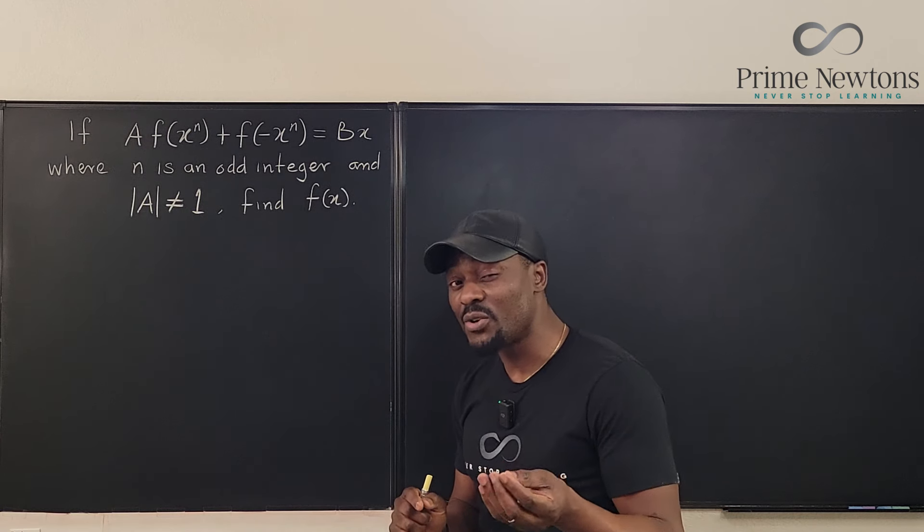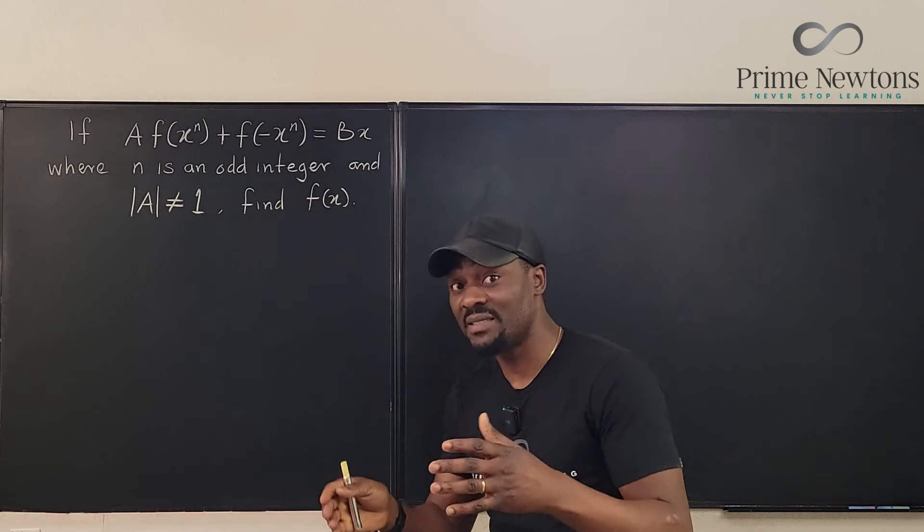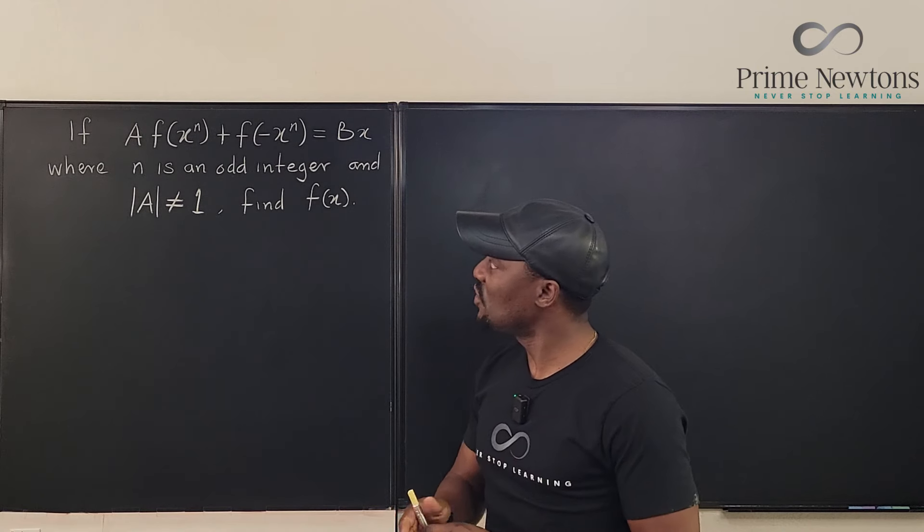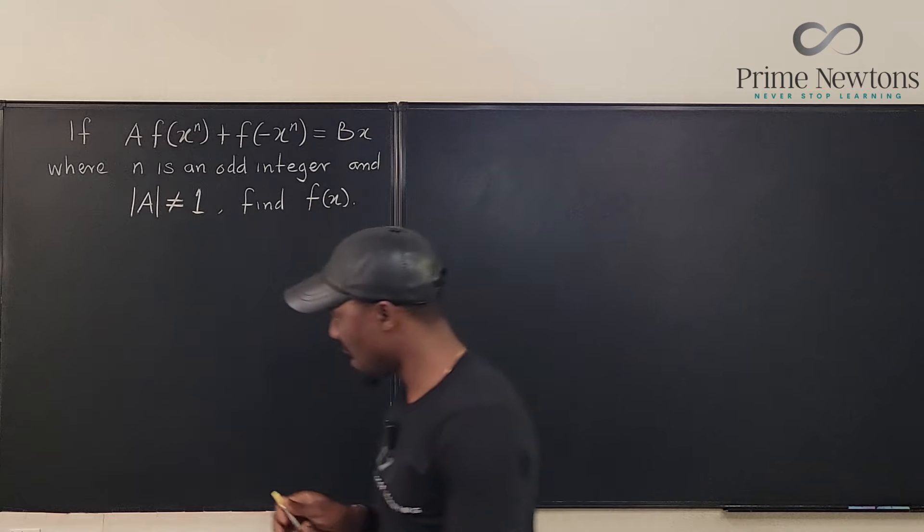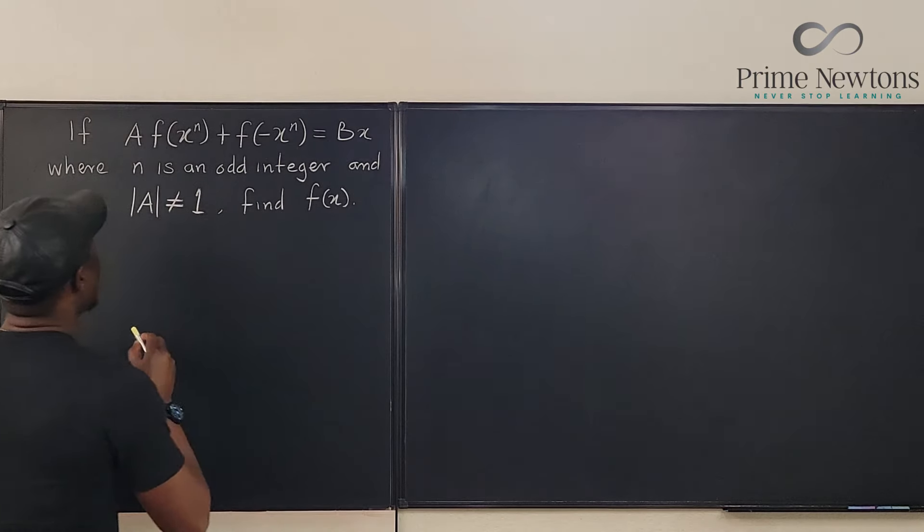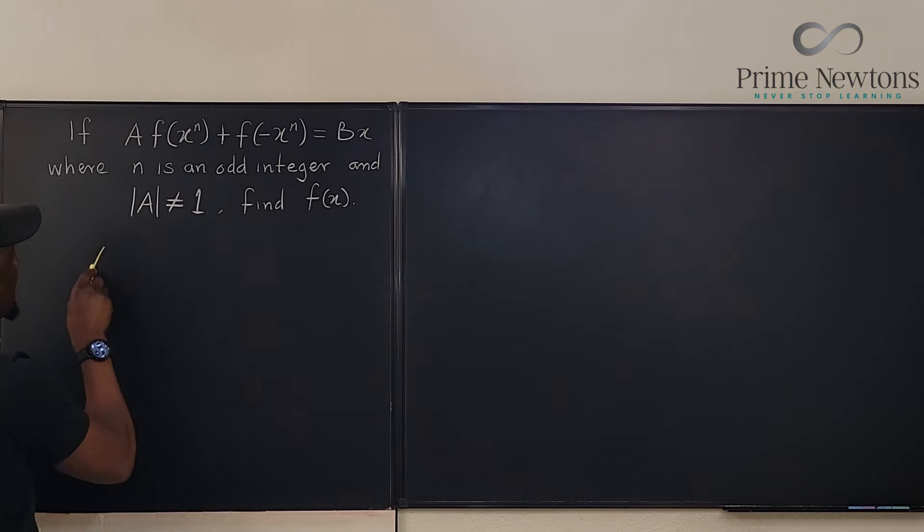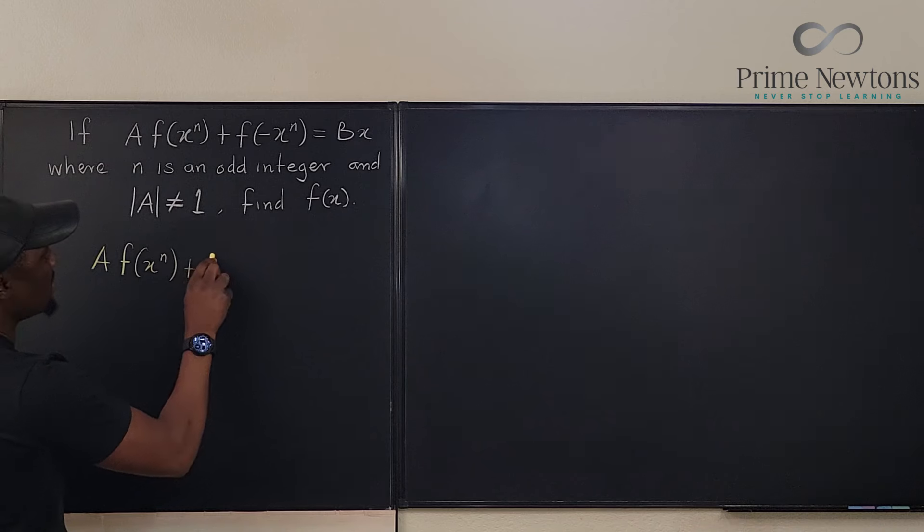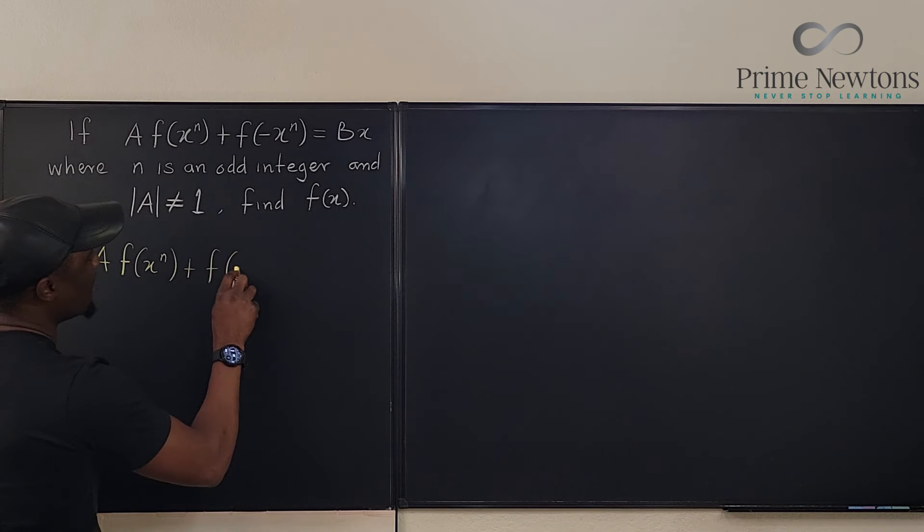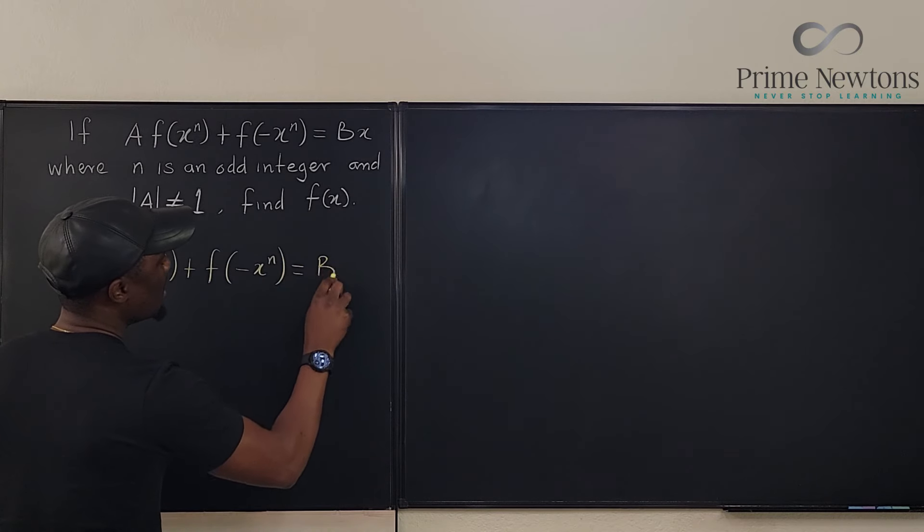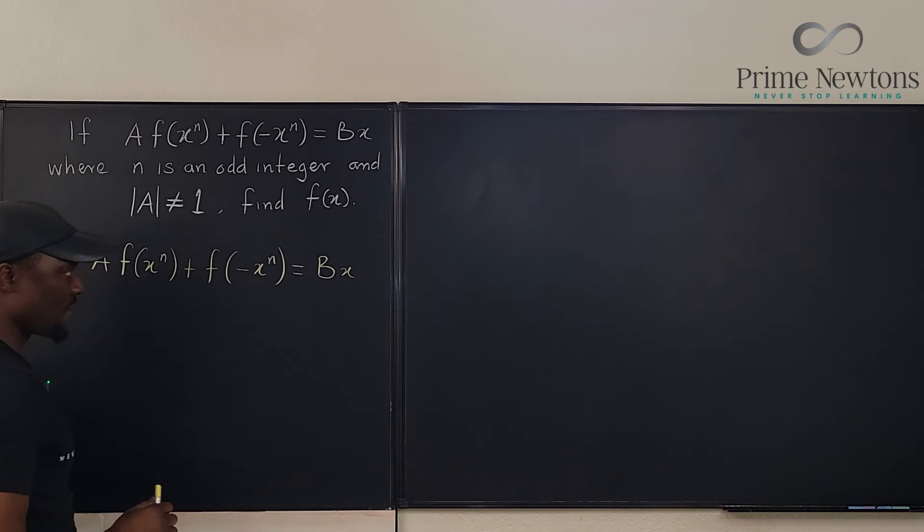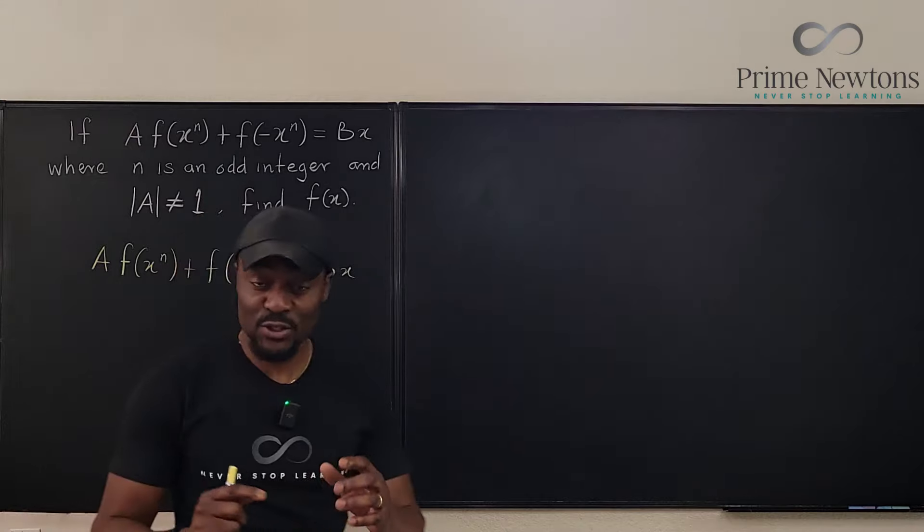Now, because of the nature of this, I think the fastest or the best thing you want to try first is to play with the signs because of the odd power. So what I'm going to say is I'm going to write A times f(x)^n plus f(-x)^n equals b times x. So what I'm going to do next is, I just copied the question.